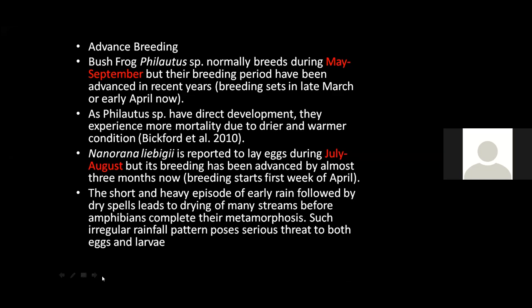Research is also being performed on breeding, specifically the breeding of certain amphibians. The bush frog Philautus, which used to breed during May to September, was found through research to now breed in March and April — an advance in breeding due to climate change. This is seen not only in Philautus species but also in Nanorana liebigii. Short, heavy episodes of early rain occur and frogs try to breed in this early rain. However, early rain followed by dry spells leads to drying up of many streams before amphibians complete their metamorphosis, potentially resulting in species extinction.